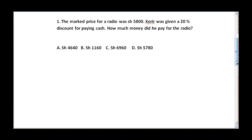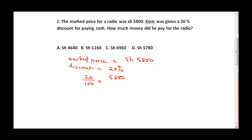The marked price was agreed to be 5800 shillings and a discount of 20% was given. To find the discount amount, we calculate 20 over 100 multiplied by 5800. The zeros cancel, giving us 580 multiplied by 2, which equals 1160 shillings. So the customer was given a discount of 1160 shillings — that is the amount deducted.